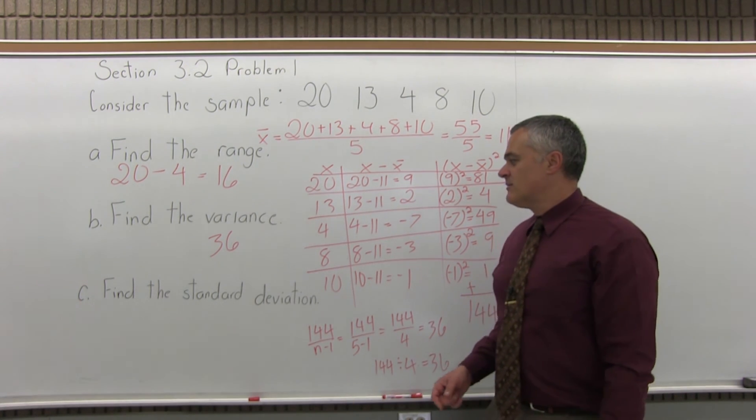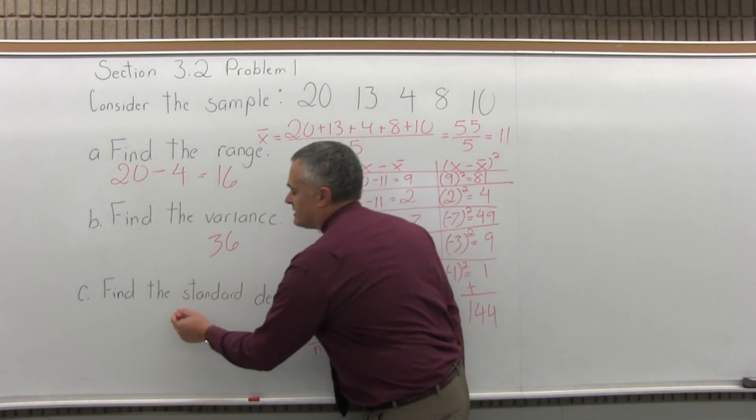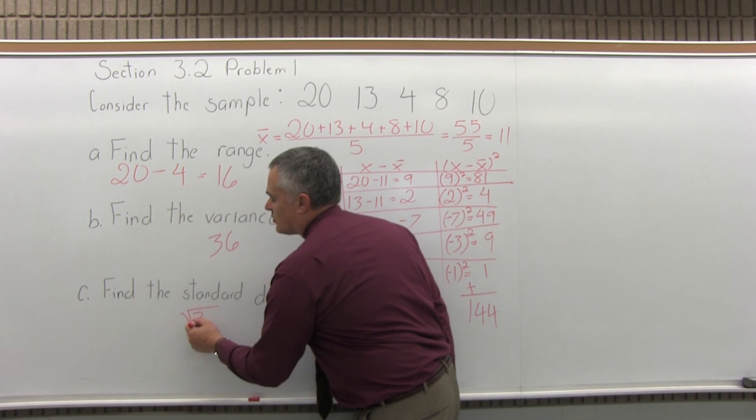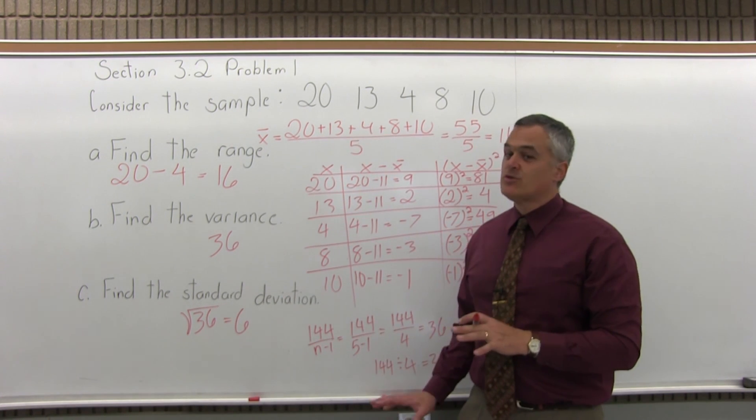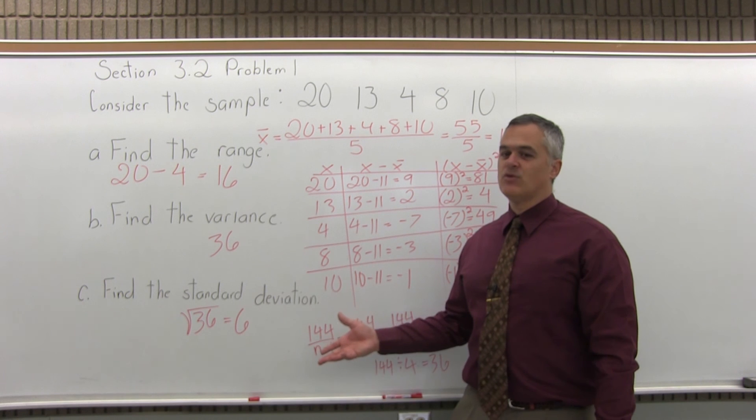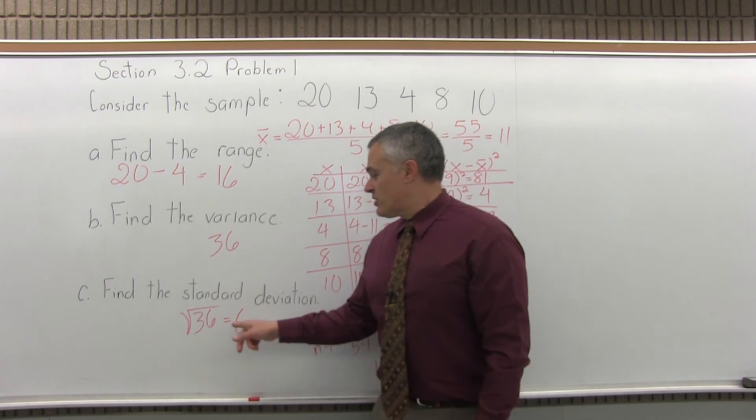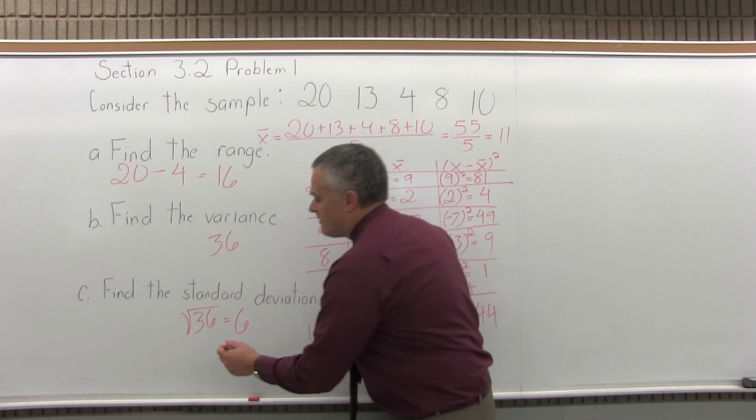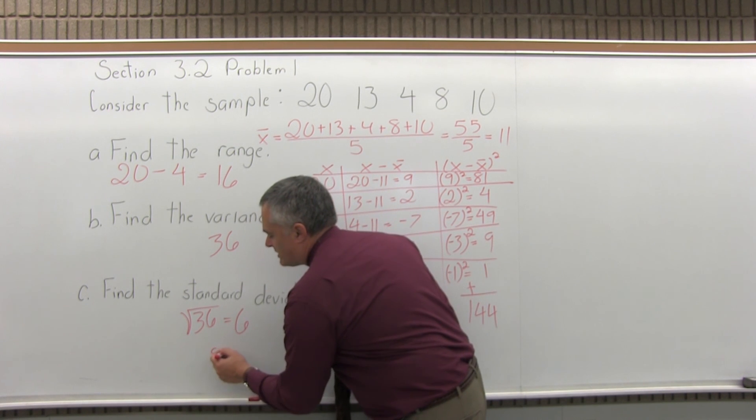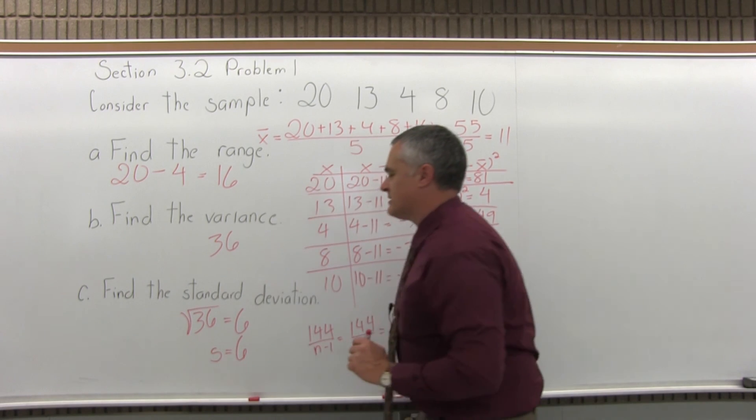And part c, find the standard deviation. The standard deviation is the square root of what the variance is. So it will be the square root of 36, and that comes out to a nice whole number of 6. That's a little bit unusual. Usually the standard deviation is going to give you a decimal. So the square root of 36 is 6 because 6 times 6 is 36. And if you want to use the symbol, the symbol for standard deviation would be lowercase s.